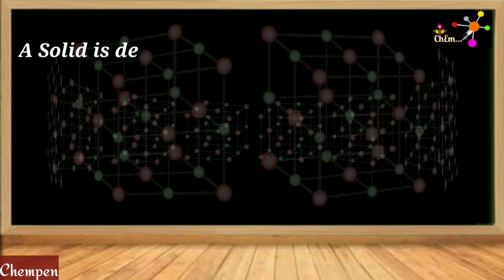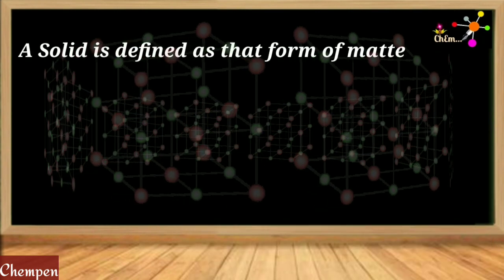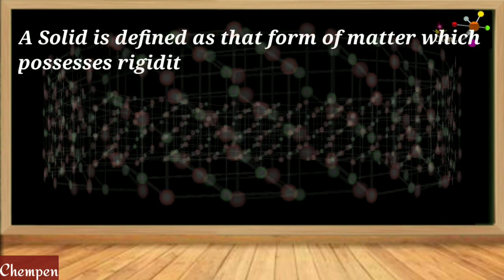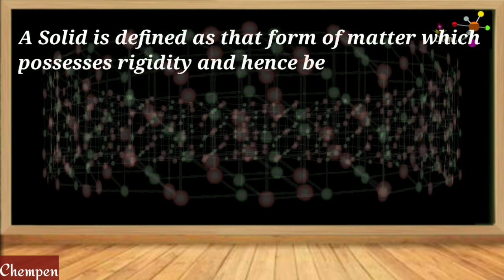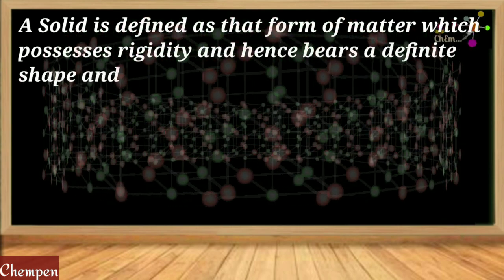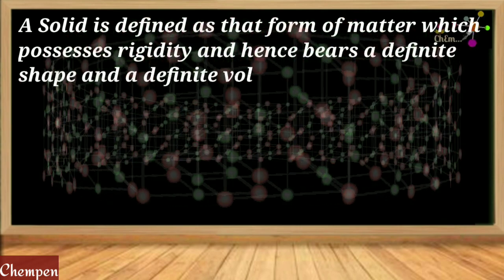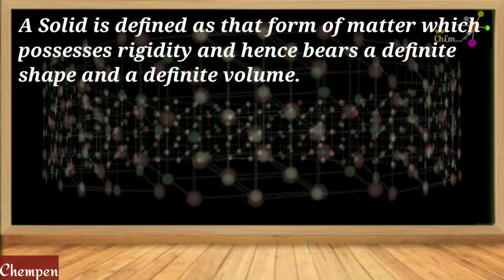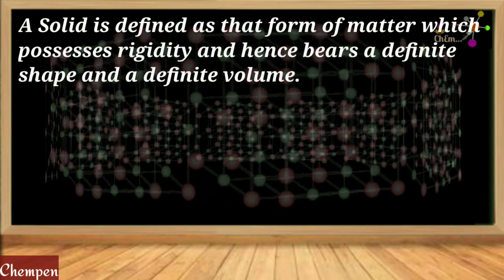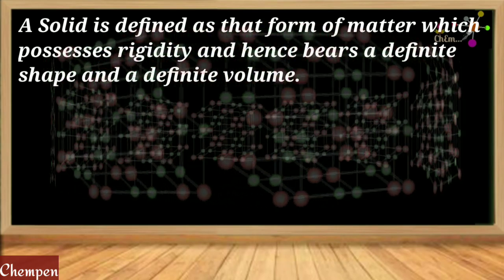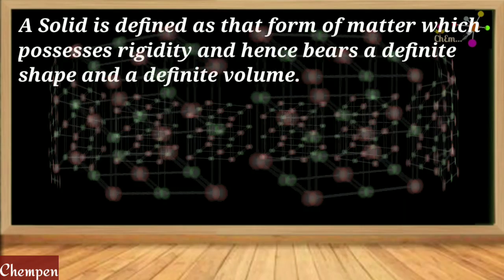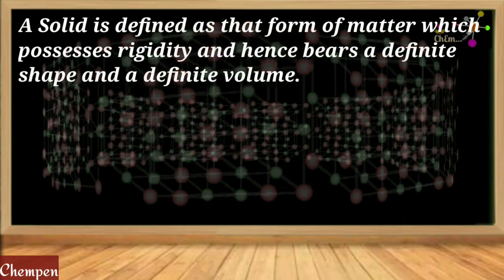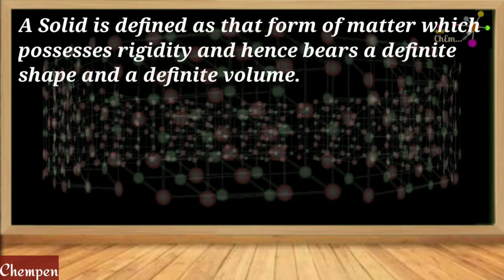A solid substance may be defined as a form of matter which possesses rigidity and hence possesses a definite shape and definite volume. Solids have definite shape and definite volume, and these are rigid.